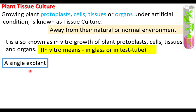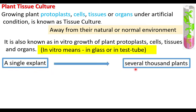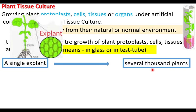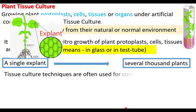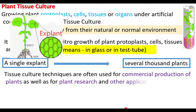A single explant can be multiplied into several thousand plants. The cells collected from plant tissues and introduced into the nutrient medium are called explants. From just a few cells, we can multiply several thousand plants. Tissue culture techniques are used for commercial production of plants as well as for plant research and other applications.